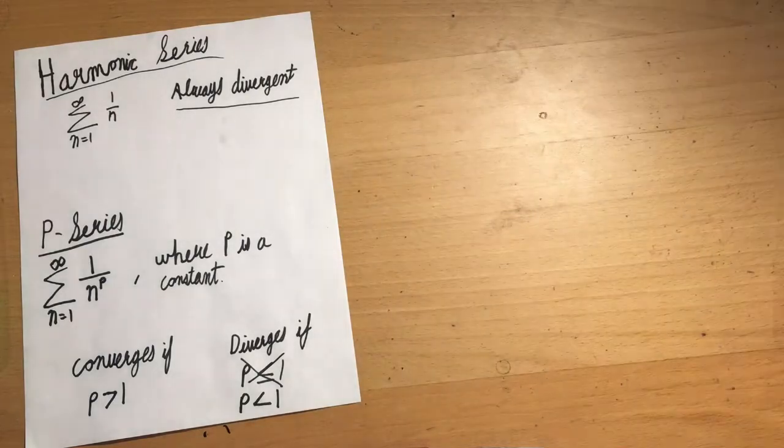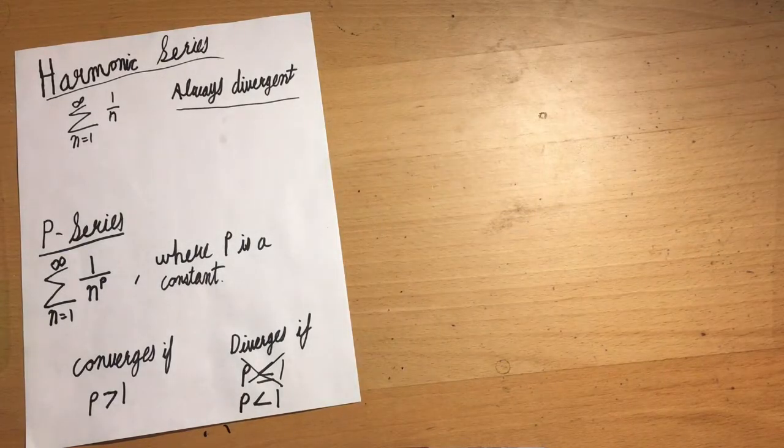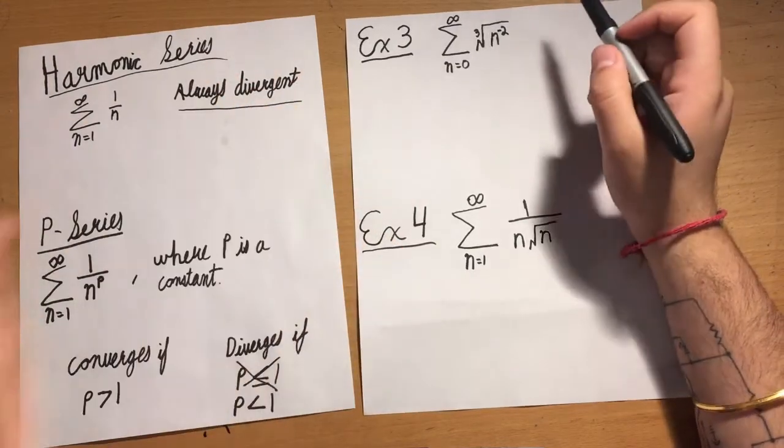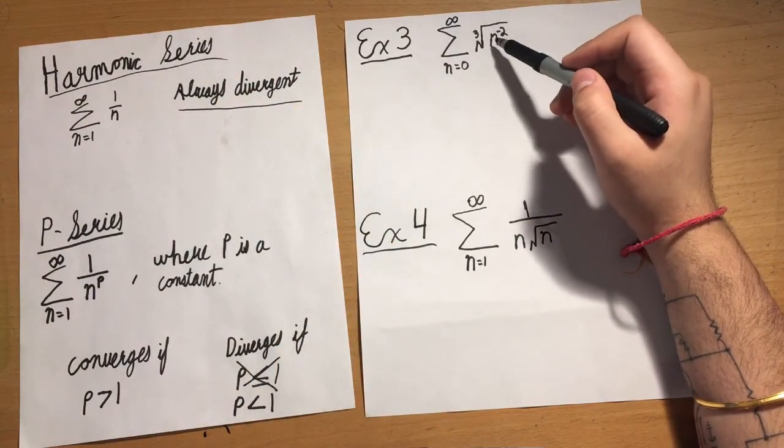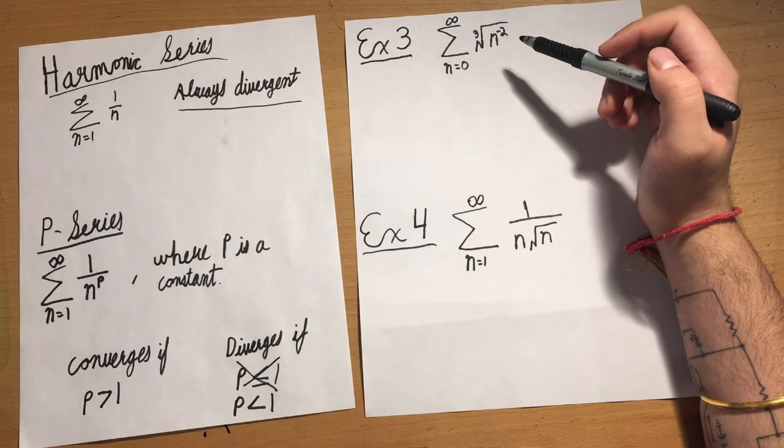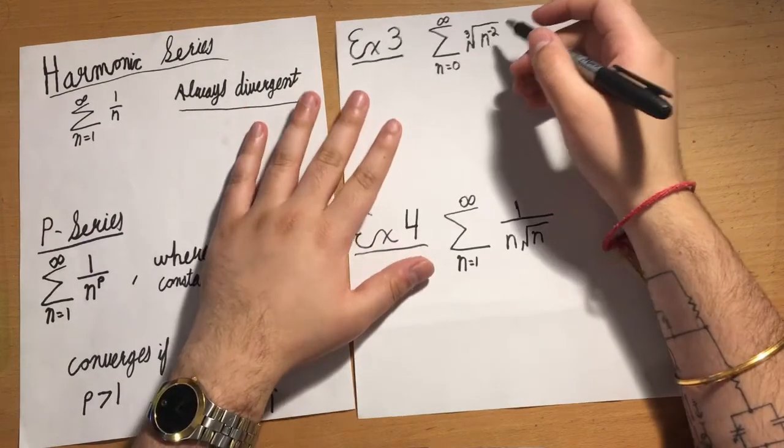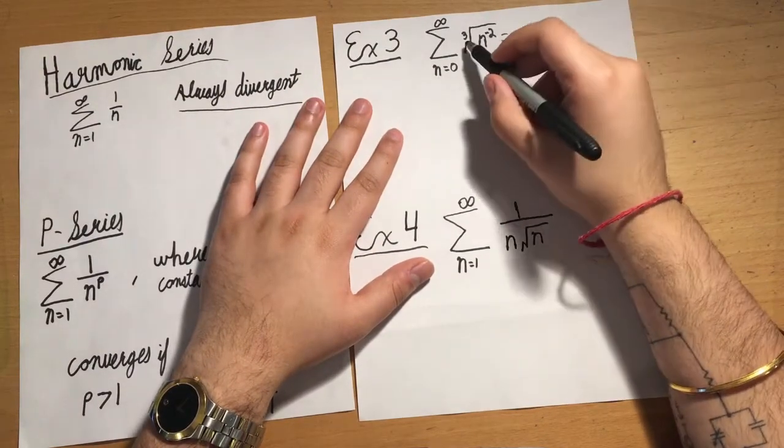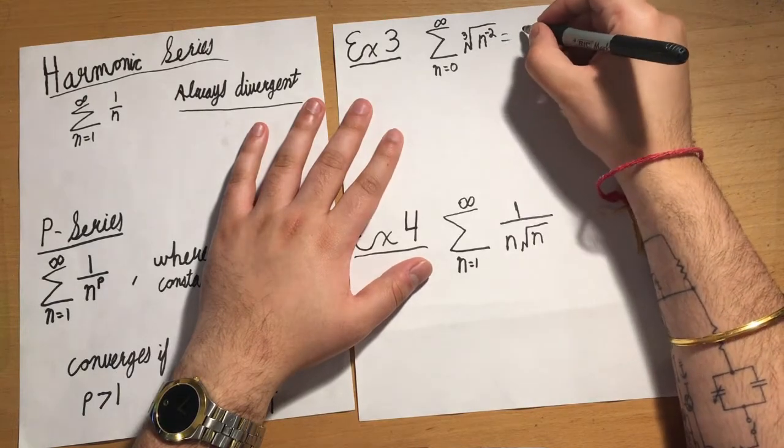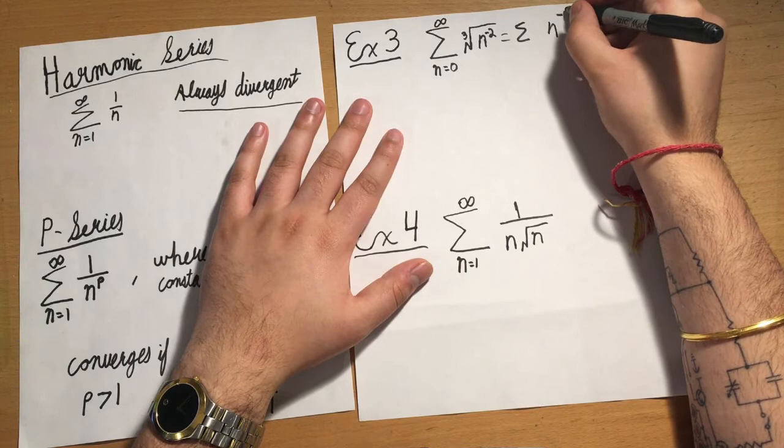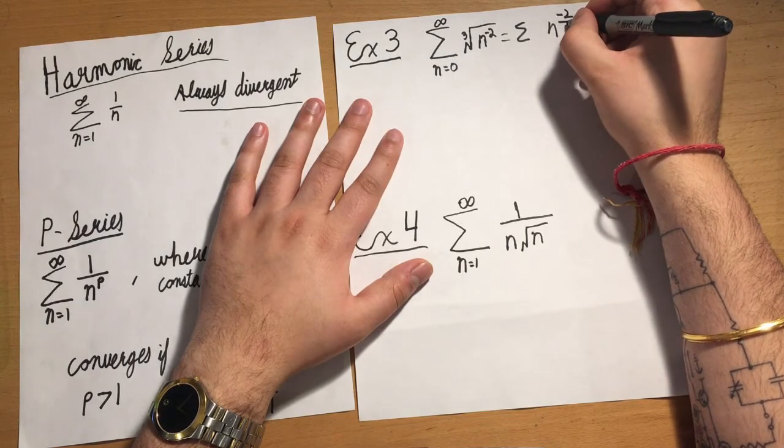Let's take a look at our next example: an infinite series, cube root of n to the negative second. I want to change everything so I'm dealing with as few exponents as possible. I'll take this and convert it to a new form: n to the negative 2/3.